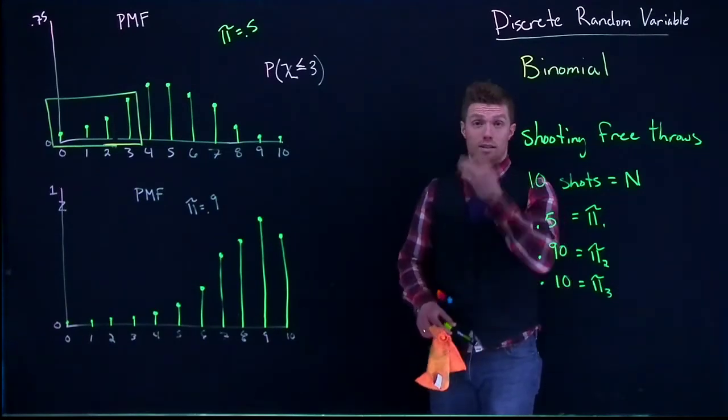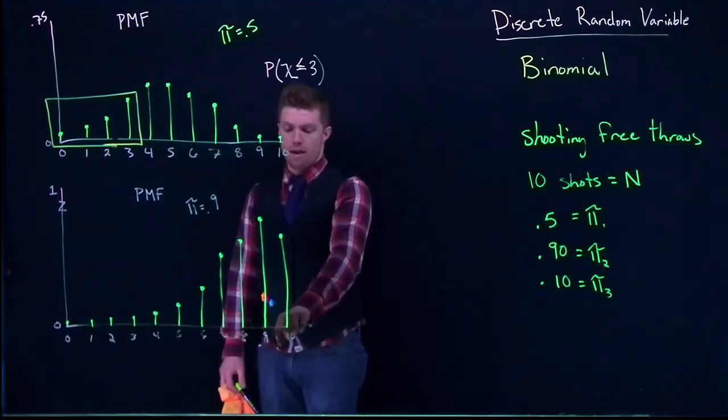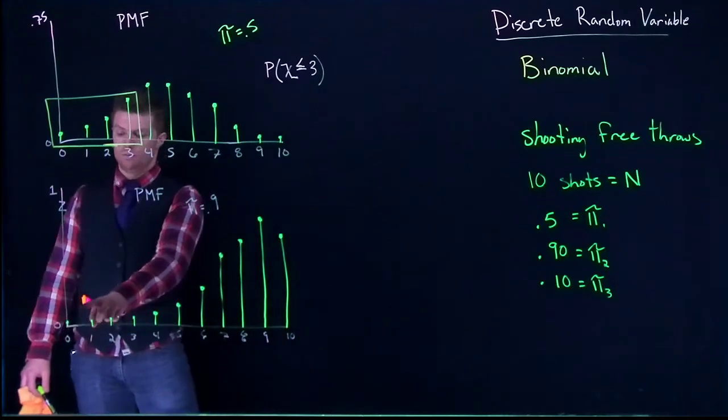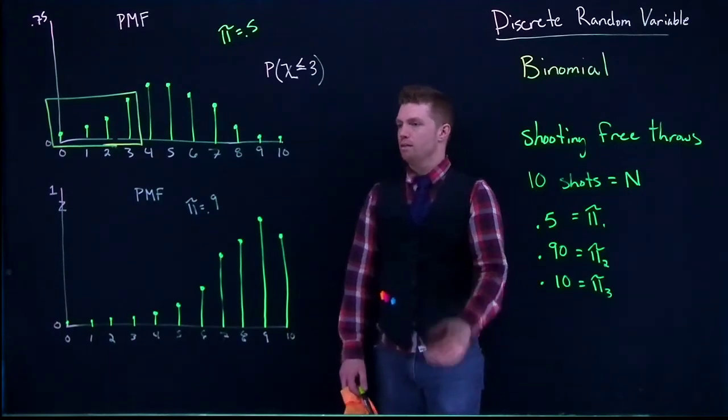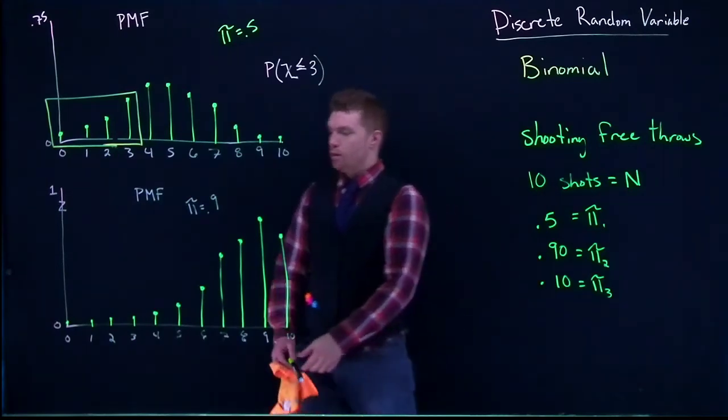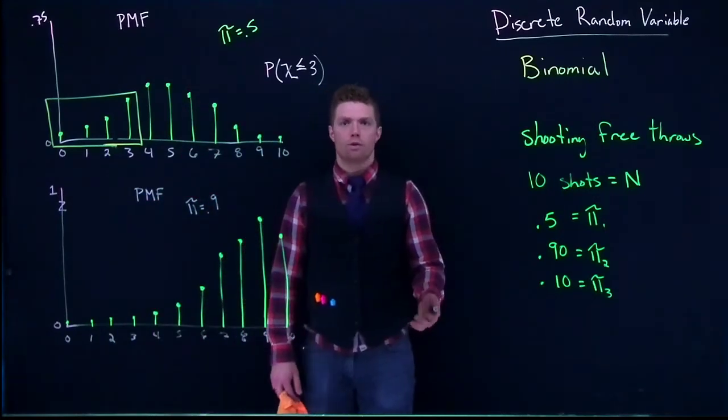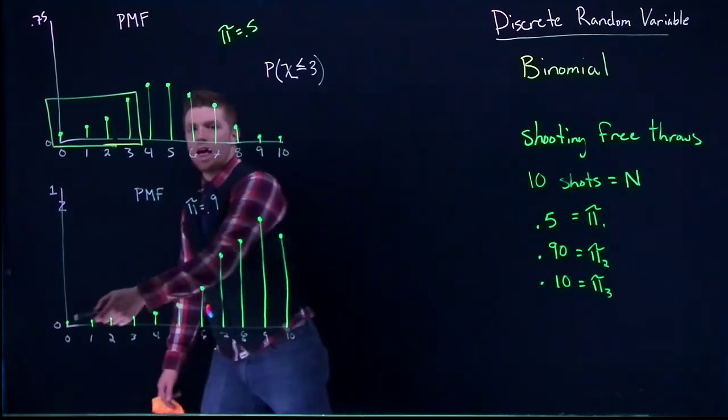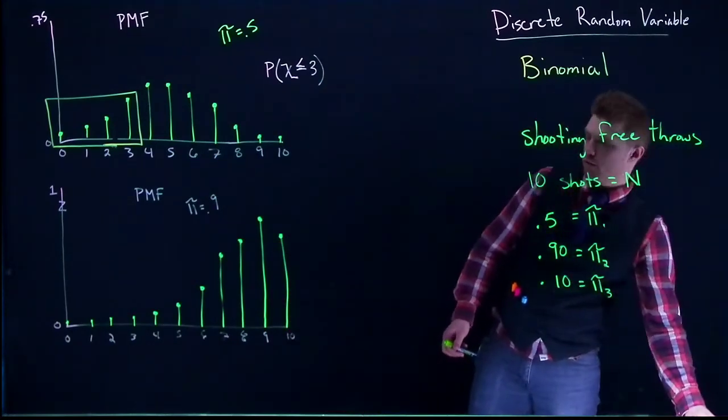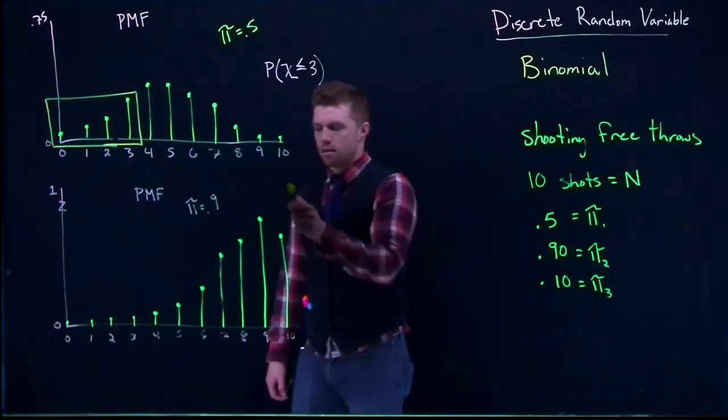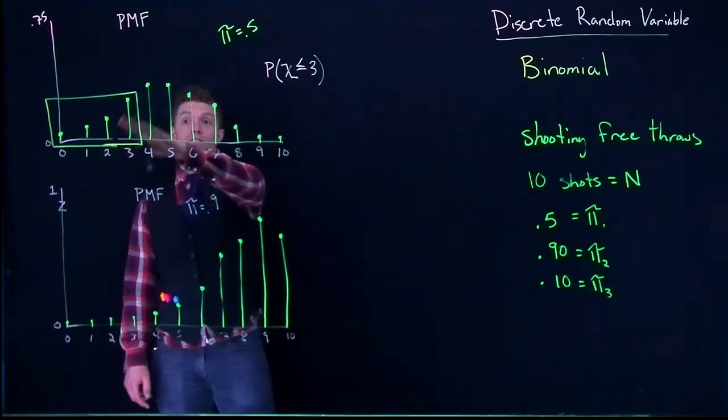This is kind of cool. It's all skewed to the left where we're way more likely to make a bunch of free throws and not very likely to make not very many. Let's say I'm an excellent free throw shooter, somebody like Stephen Curry or something. Is it possible for him to step up to the free throw line and miss 10 free throws in a row? Yeah, it's possible, but the likelihood of it happening is very small. It's way more likely that some elite free throw shooter in the NBA is going to make most of his shots.